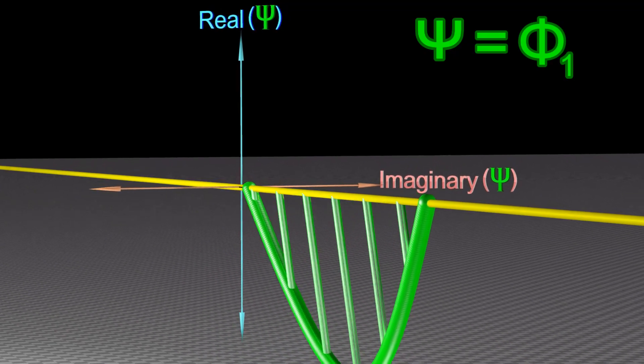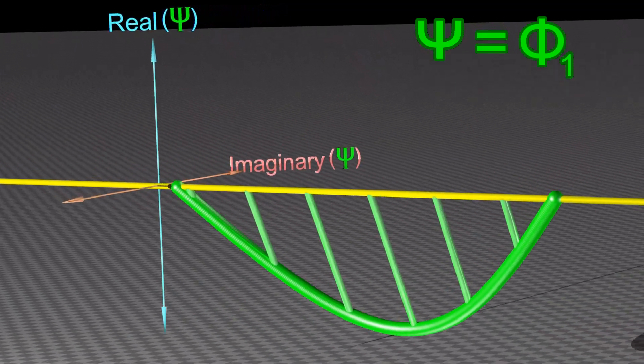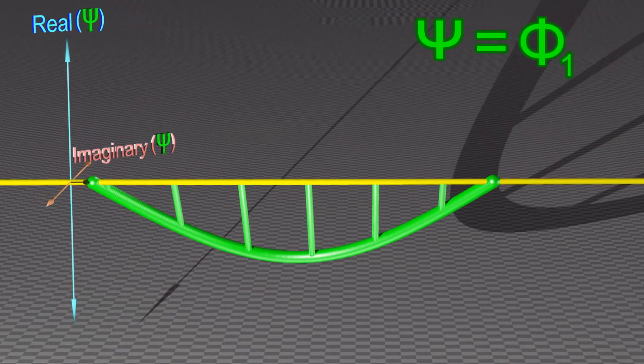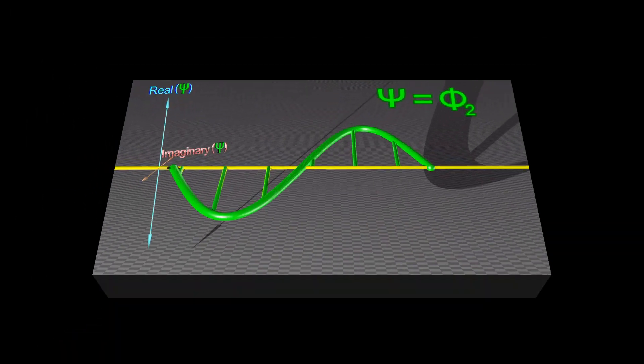A particle with a higher energy will have a wave function that rotates with a higher frequency, and it will look like this.